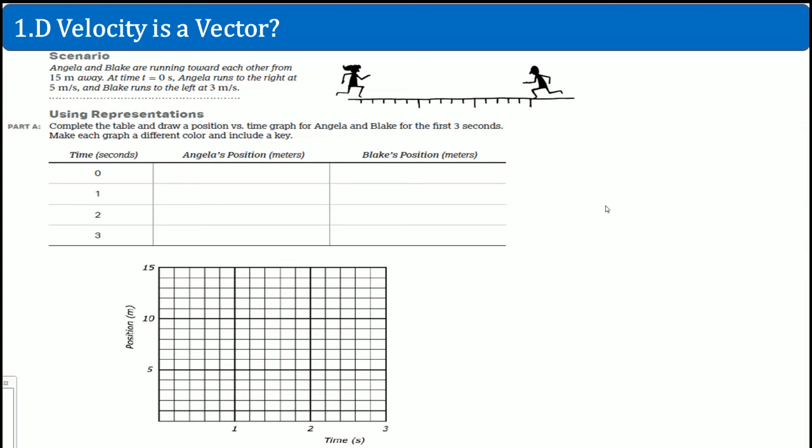Welcome, this is the AP Physics Workbook Solutions. Here we're going to cover one point D, which is velocity is a vector. Here's the scenario: Angelica and Blake are running towards each other from 15 meters away. So that's what the distinction is. I'm showing you the 15 meters distance.